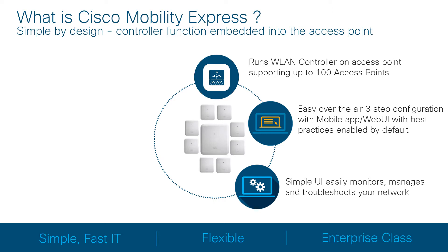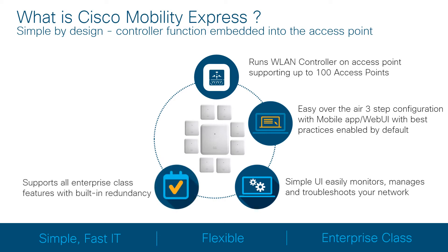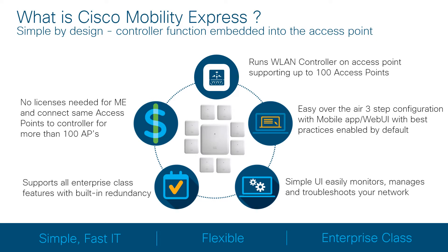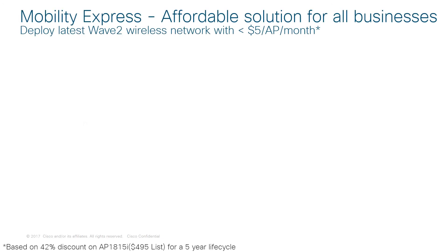Not only does Mobility Express support all of the enterprise features, but it has built-in redundancy. If the AP with the controller goes down, the next one takes over seamlessly with minimal disruption to the network. Finally, if your organization grows, you can simply reuse the same access point and connect it to a physical controller, providing you with full investment protection.